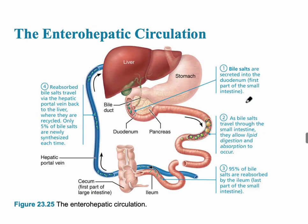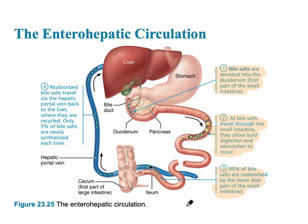The enterohepatic circulation works as follows: bile salts are secreted into the duodenum, the first part of the small intestine, from the gallbladder. As bile salts travel through the small intestine, they allow lipid digestion and absorption to occur by breaking down fatty molecules. By the distal part of the small intestine — the ileum — 95% of the bile salts are reabsorbed and travel back to the hepatic portal vein of the liver, where they can be recycled for the next fat digestion cycle.